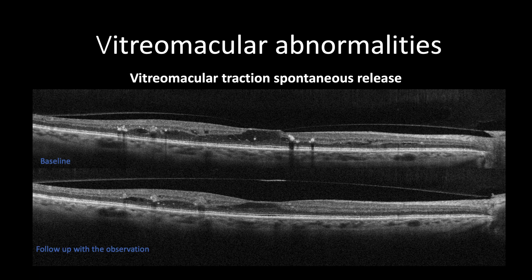This is a case of vitreomacular tractions with diabetic macular edema, presenting with 20/25 best corrected visual acuity, showing anterior-posterior oblique vitreomacular tractions with cystic formation and increased central macular thickness. The decision was to follow up the patient within six months, as spontaneous release of vitreomacular tractions occurred with improvement of best corrected visual acuity to 20/20 and reduced central macular thickness, with persistent macular cysts requiring no further intervention other than observation.